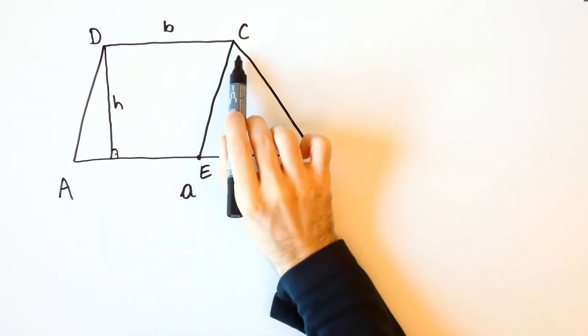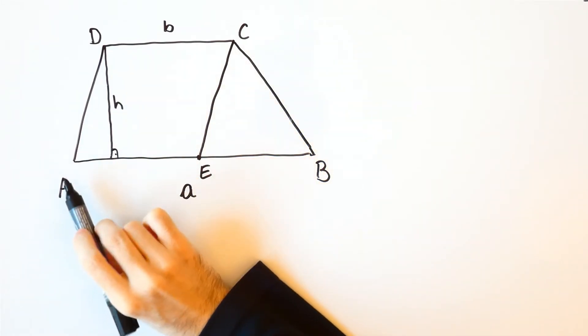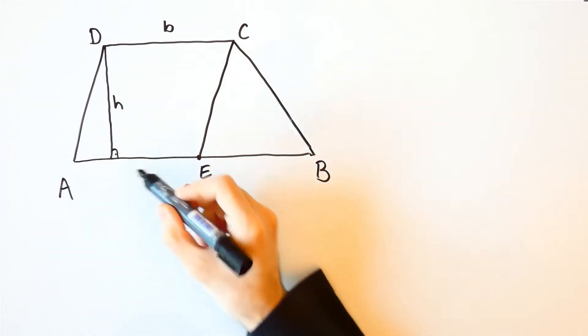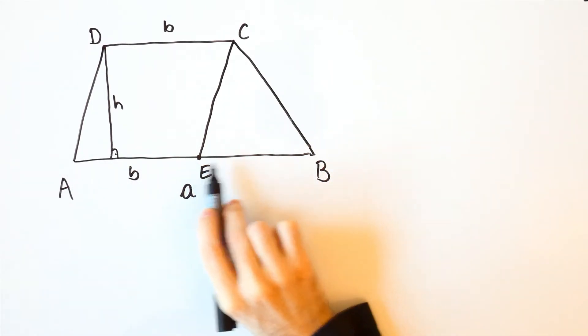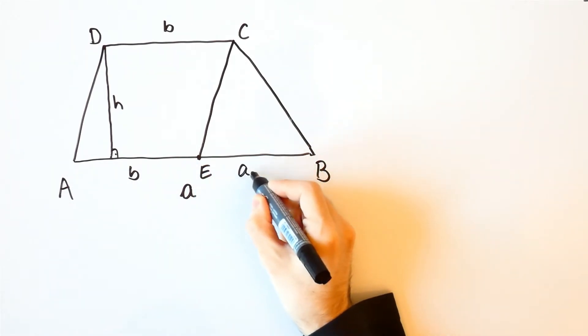Now, AECD is a parallelogram which means that AE is equal to B but since AB is A that means that EB is equal to A minus B.